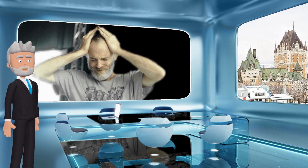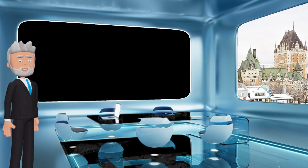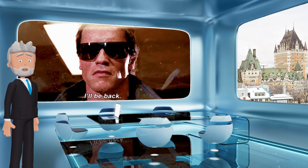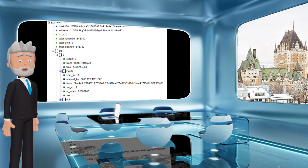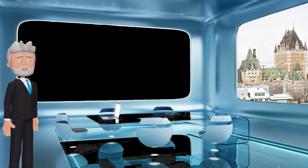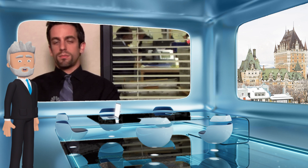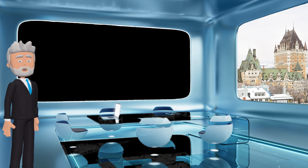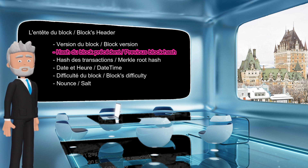Ne t'en fais pas. Ce sont tous des informations sur lesquelles nous reviendrons en détail. Pour des soucis d'exactitude, j'ai tout mis ici. Ce qu'il faut noter, et le plus important, c'est que le header du bloc contient le hash du bloc précédent. Et c'est ce qui compose la fameuse chaîne de la blockchain. Le hash est en fait une sorte de photo numérique du bloc précédent, enfin de son header, son entête.